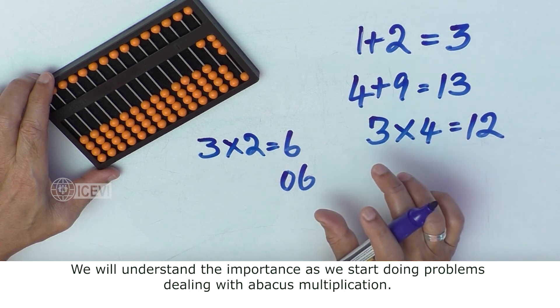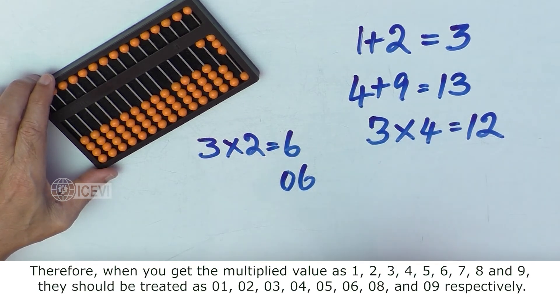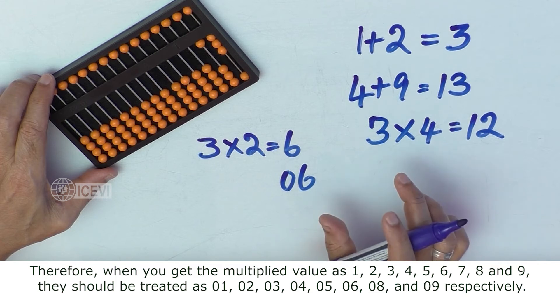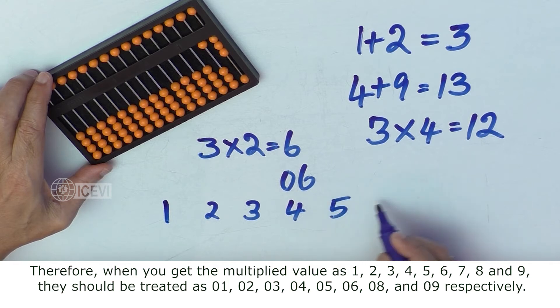We will understand the importance as we start doing problems dealing with the Abacus Multiplication. So therefore, when you get the multiplied values as 1, 2, 3, 4, 5, 6, 7, 8 and 9,